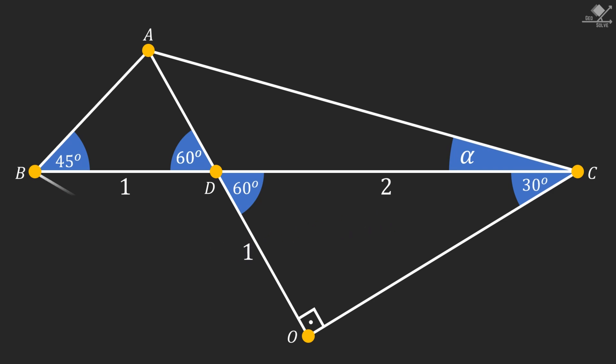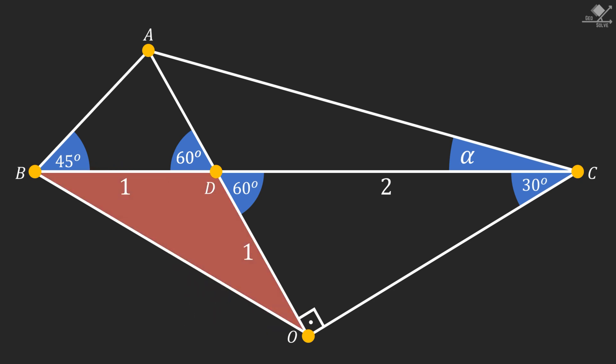Now, connect point B and point O. Notice that this triangle is isosceles and its base angles must be congruent. Using exterior angle theorem, we can find these base angles to be 30 degrees.